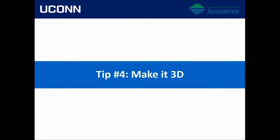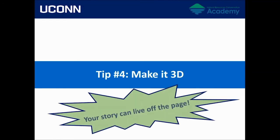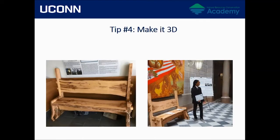Tip number four is make it 3D — this is a bonus section at your discretion. Your story can live off the page. One example: a student looking at urban forestry and the economic benefits of trees created an artisanal bench from a tree that fell in a park and brought it to CCNR. The bench attracted so much attention that he presented at City Hall, and it is now installed in a city park.